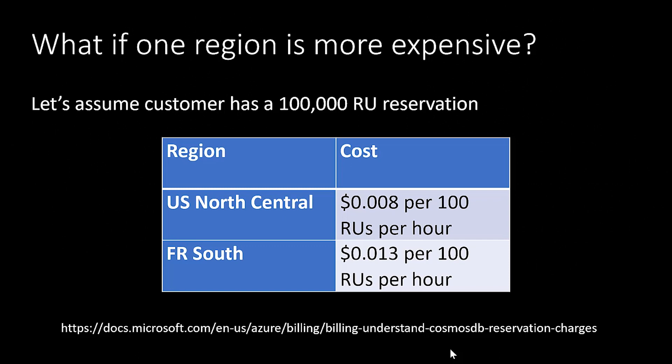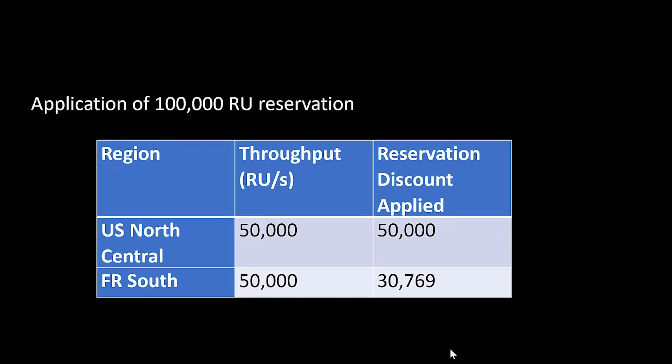Let's go through an example to illustrate that. Let's talk about how the application of 100,000 RUs would apply to each of these regions. If you used 50,000 units of throughput in U.S. North Central and in France South: because the ratio for U.S. North Central is 1, 50,000 RUs from your reservation would be applied to U.S. North Central. Because the ratio for France South is 1.65, we would divide 50,000 by 1.65 to arrive at about 30,769 — that's the number of RUs that would be applied from your reservation to this more expensive region. So you would have to pay around 19,000 or so on-demand RU costs, billed at whatever the standard rate is for the France South region.